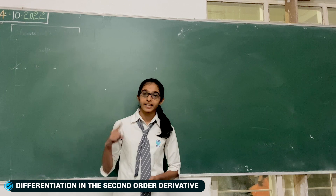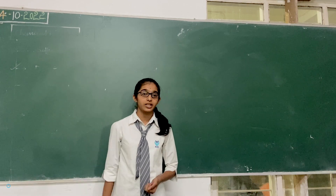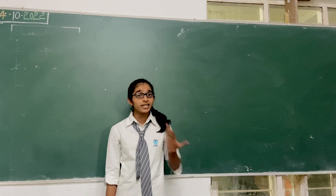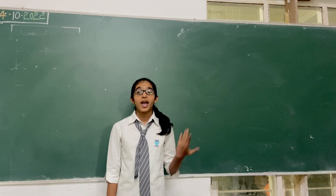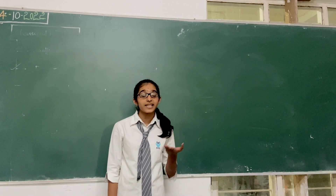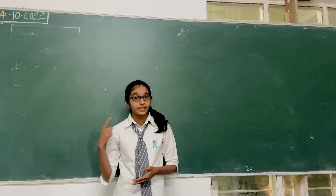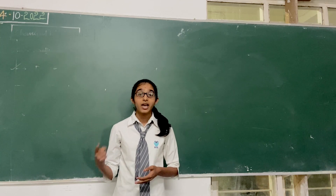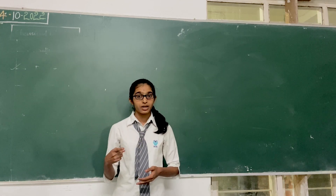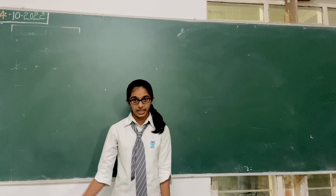In the second order derivative — what is a derivative? It is defined as the slope of a tangent. It is denoted by m, where m is nothing but dy by dx.